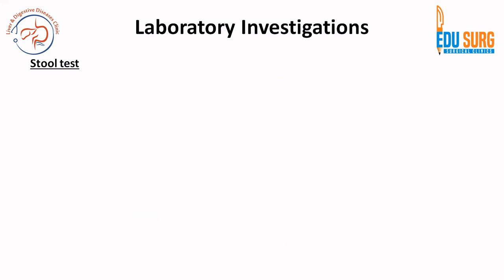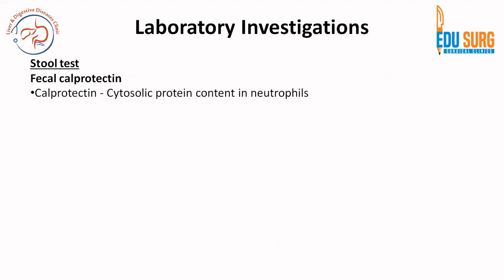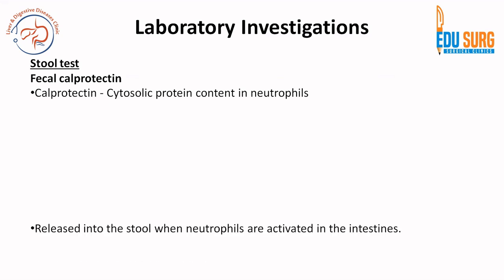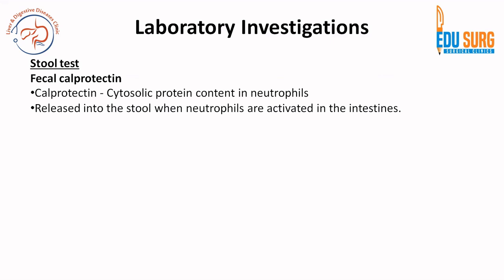When we come to laboratory investigations, the most important feature in IBD that is different from other diseases is fecal calprotectin. Calprotectin is a cytosolic protein found in neutrophils. It is released into stool when neutrophils are activated in the wall of the intestine.